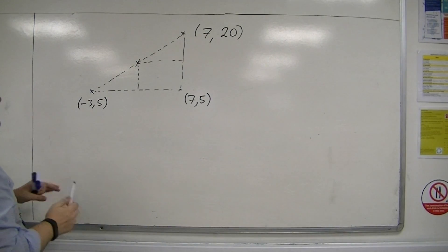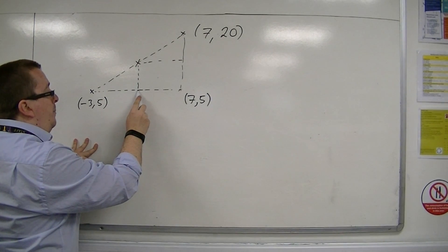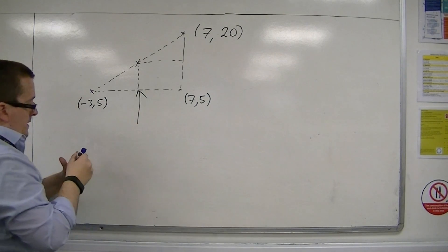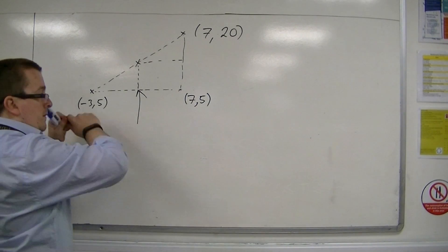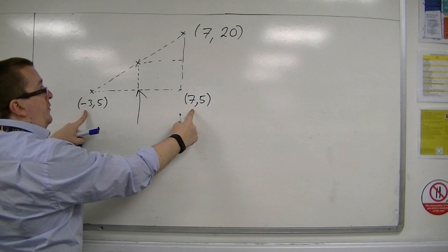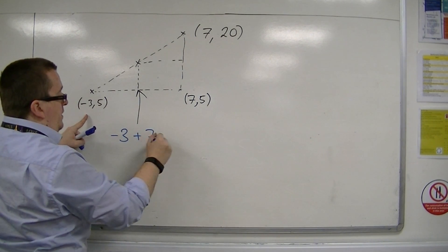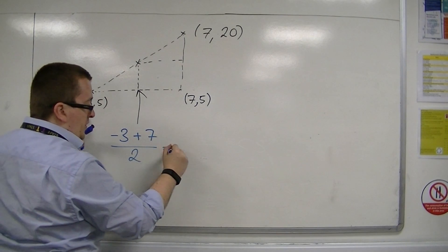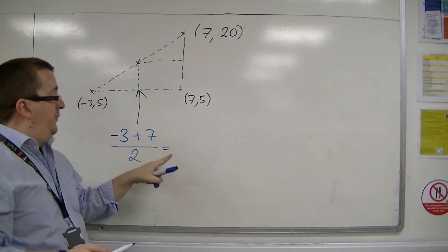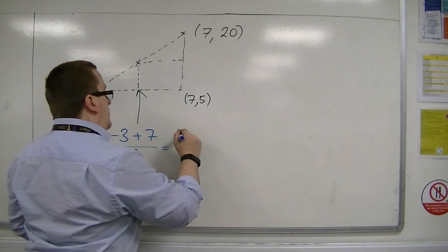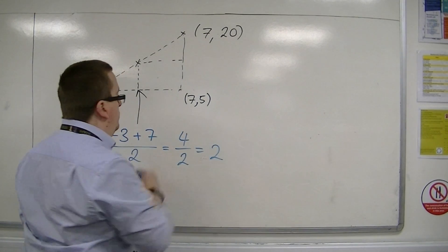So in actual fact what you're trying to do to find this part, the x-coordinate, is to find the midpoint between minus 3 and 7. So minus 3 plus 7, add them together, divide by 2. So minus 3 plus 7 is 4, so I get 4 over 2, so just 2.